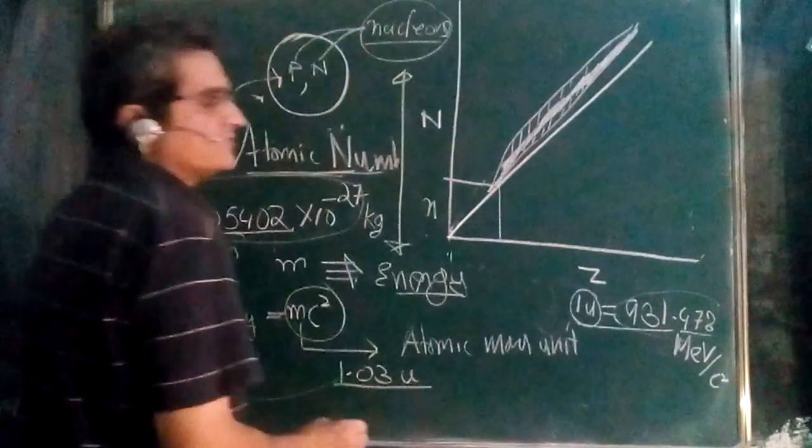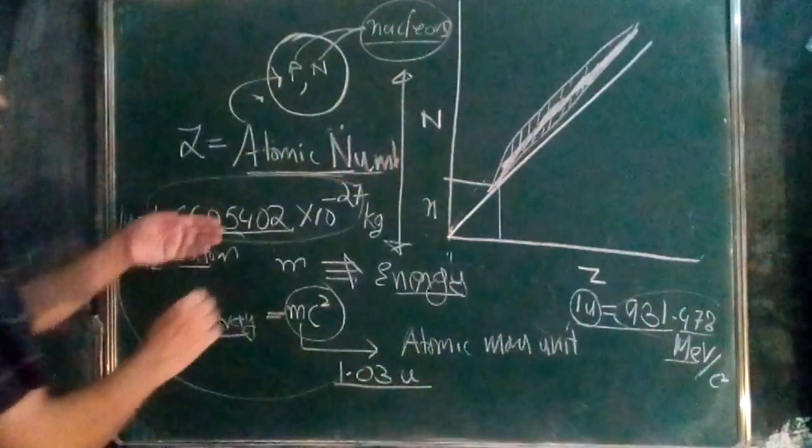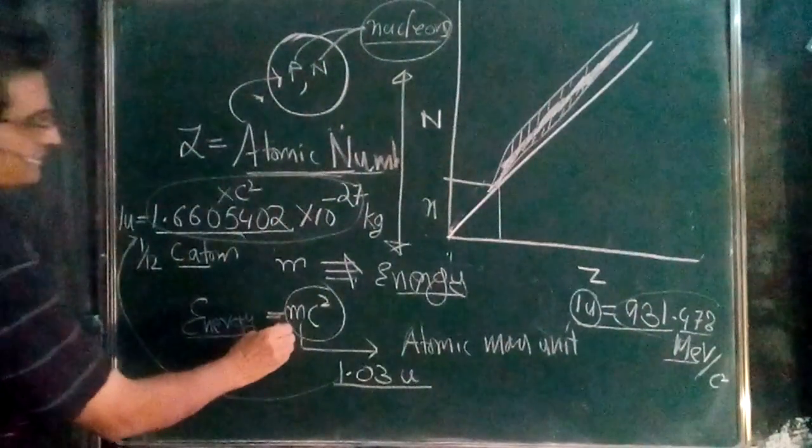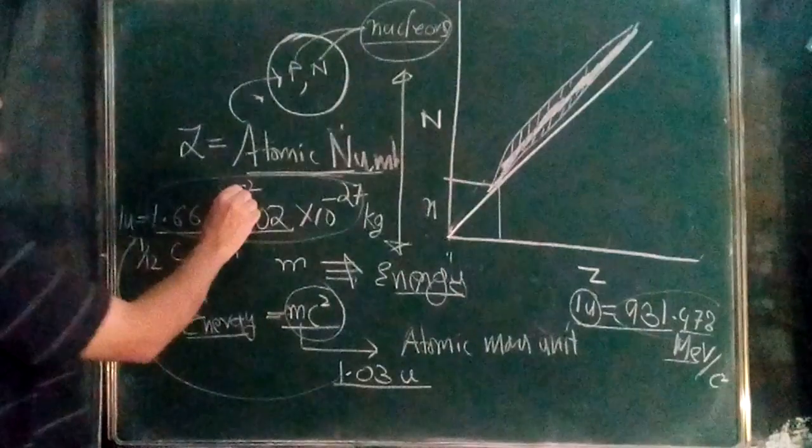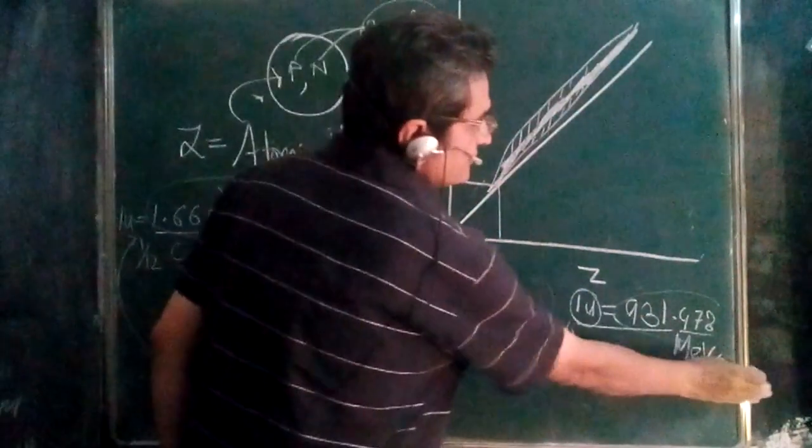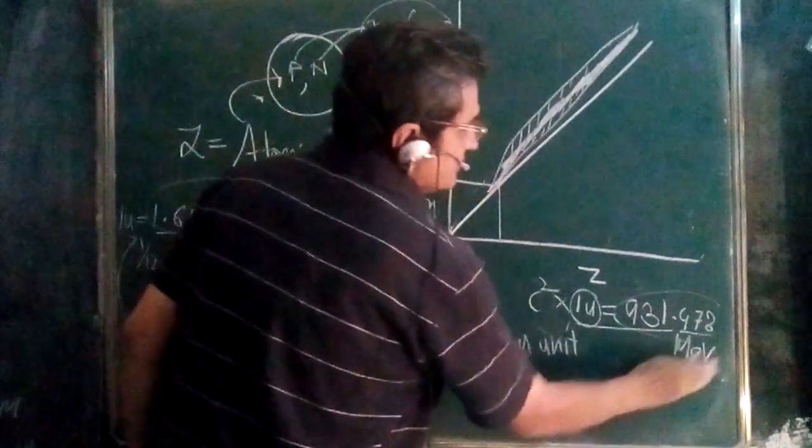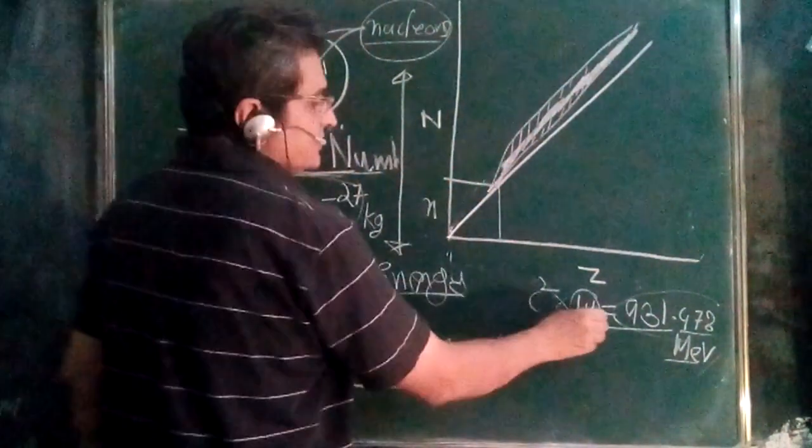One atomic mass unit is 931.478 MeV/c². If you multiply by c², you get 931 MeV. This is the relationship: 1u × c² = 931.478 MeV. Using this, you can convert any atomic mass unit to energy.